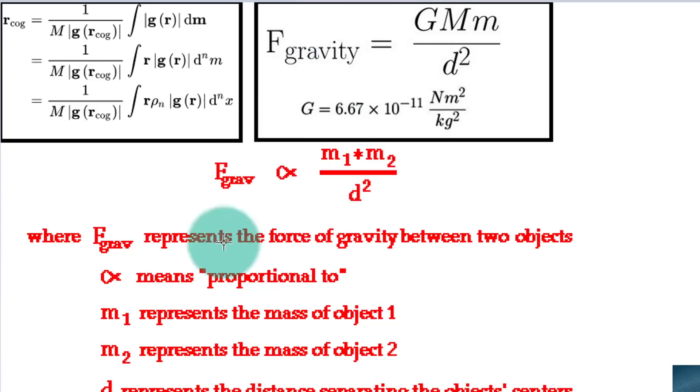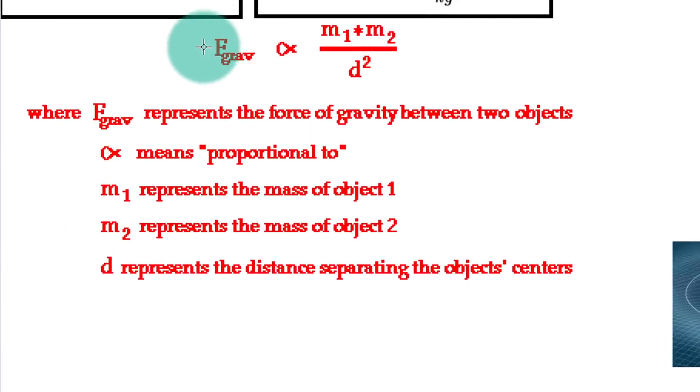Oh, then you have this thing right here, and I'll read this to you. F grav represents the force of gravity between two objects. This little symbol here means proportional to, proportional to, now we're going to read the top line, the mass of the object of the first object times the mass of the second object divided by the distance separating the object centers.